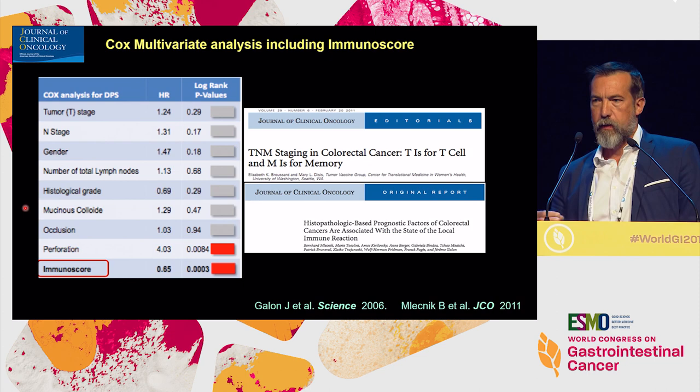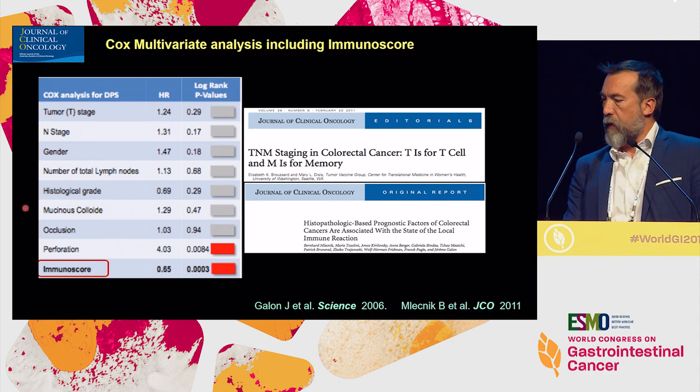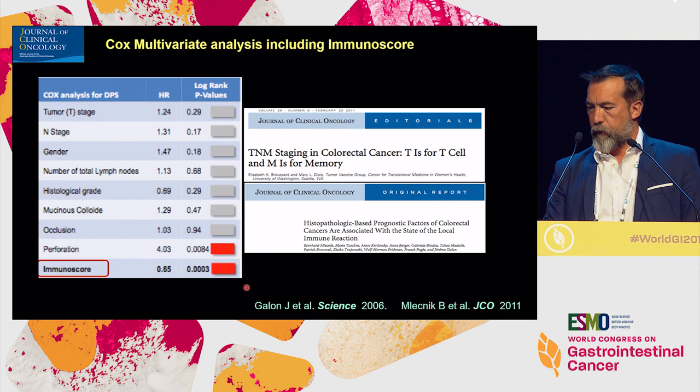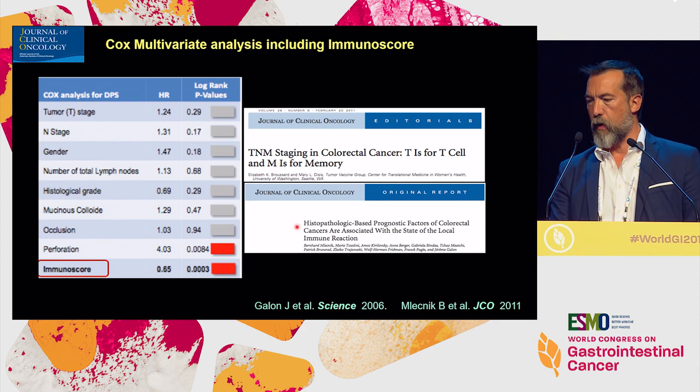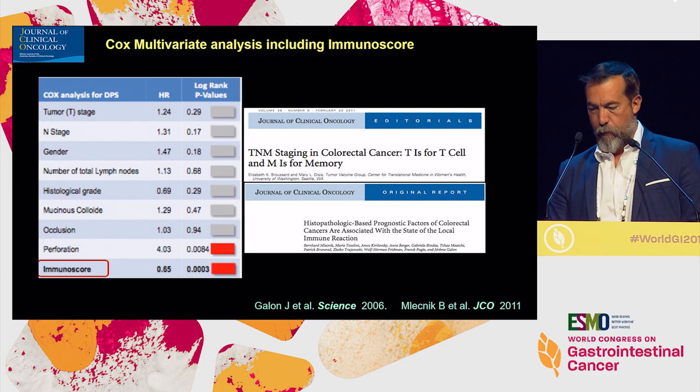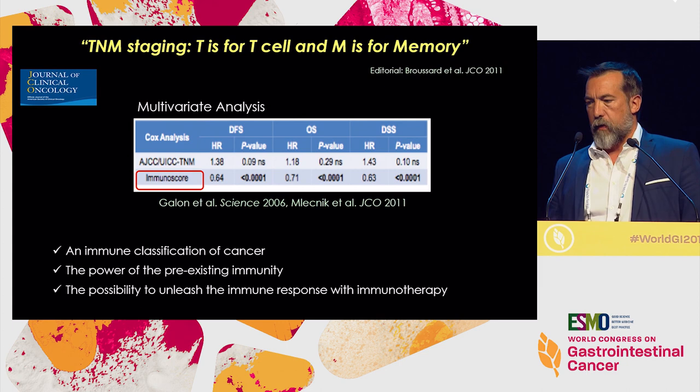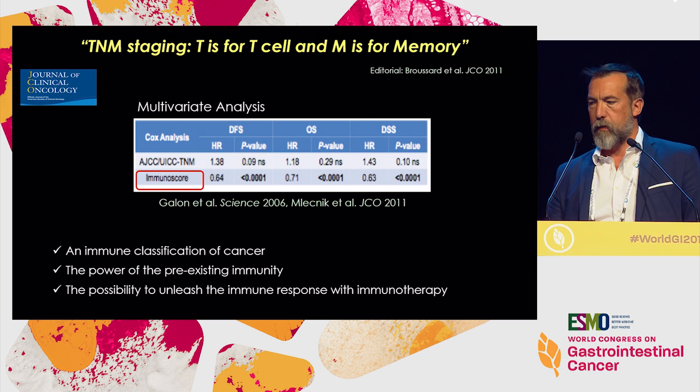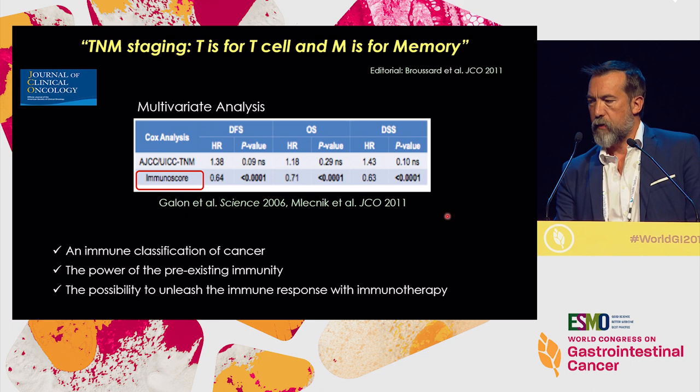In the Cox multivariate analysis, only bowel perforation remains significant together with immunoscore. We described the relationship between tumor-related parameters and immune parameters in a paper with the quite provocative editorial title: 'TNM — T is for T cell and M is for memory.' When comparing the gold standard AJCC TNM classification with the immunoscore classification on multivariate analysis, immunoscore remains significant for DFS, OS, and DSS, while the TNM staging system is dependent upon the pre-existing immunity of the patients.